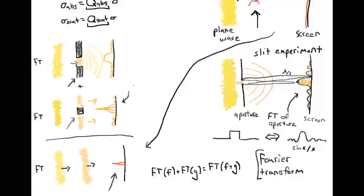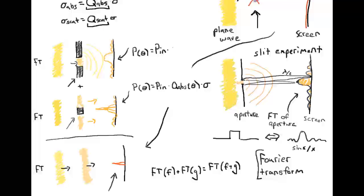The power as a function of angle is equal to our incoming power times Q_abs times the geometric cross-section sigma for the absorbed power, and in the complementary case it's proportional to the input power and represents the radiation that interacted with the particle's geometric area and still ended up on the screen — which is precisely what a scattering event is, and is still proportional to the geometric cross-section.